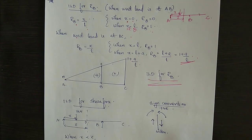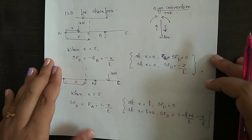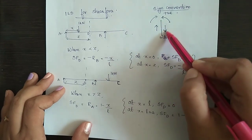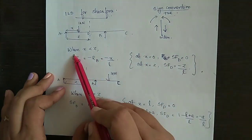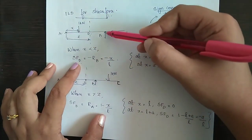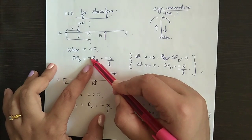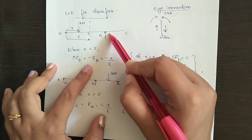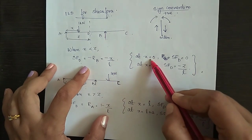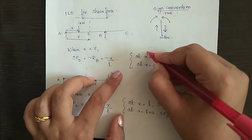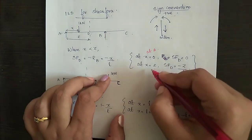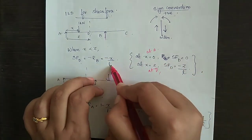Now we are going to plot the ILD for shear force. The sign convention followed here is: to the right of the section, downward force and anti-clockwise moment are taken as positive. When X is less than Z, shear force becomes minus RB, because upward force to the right of section is negative. So shear force equals minus X by L. At point A, where X is 0, shear force is 0. At X equals Z (point D), shear force becomes minus Z by L.